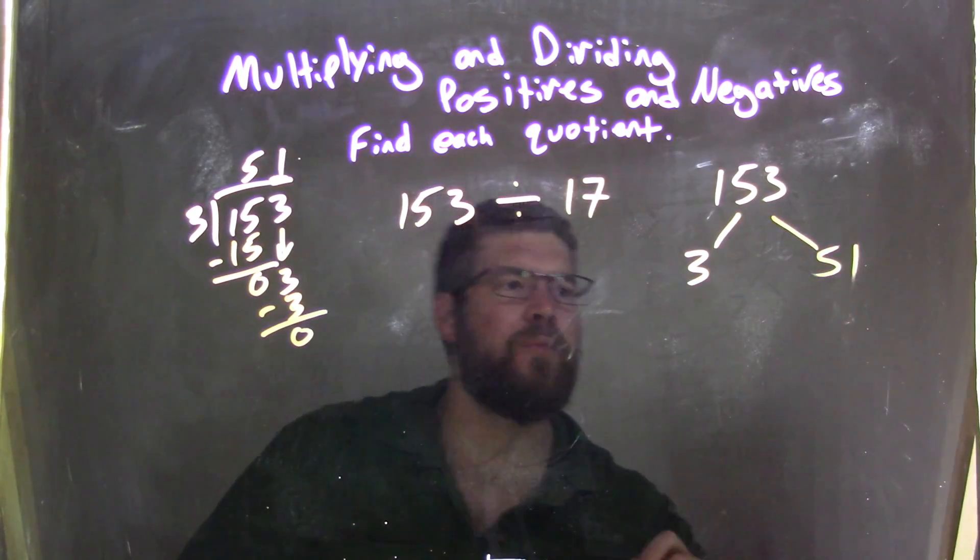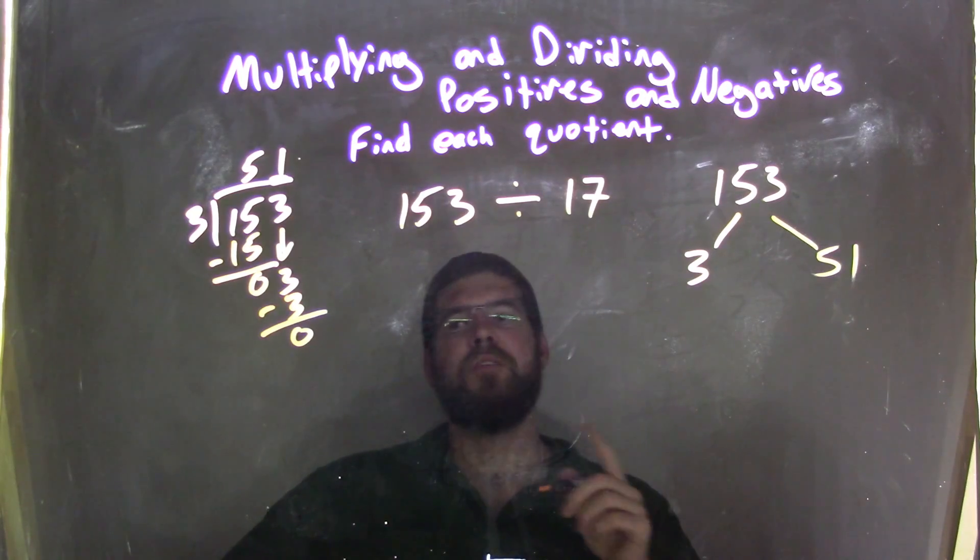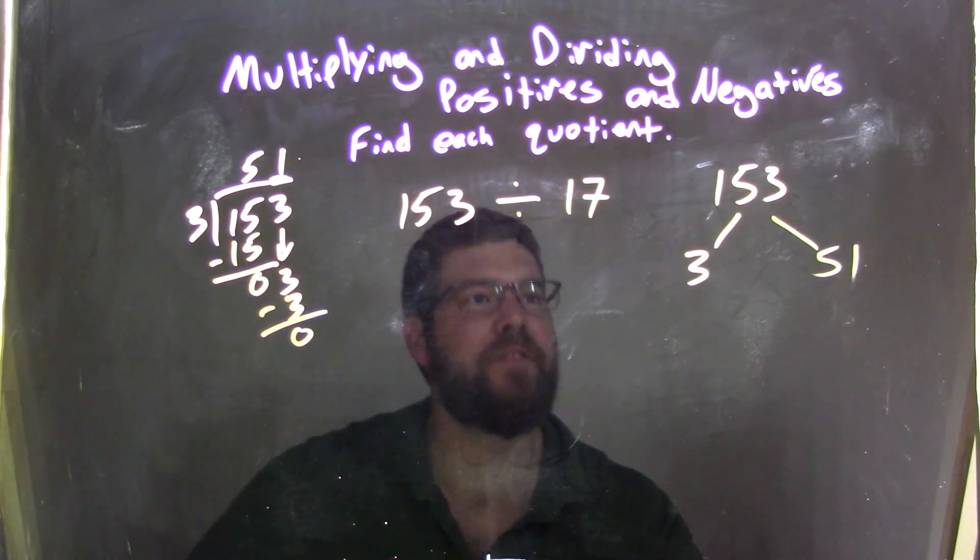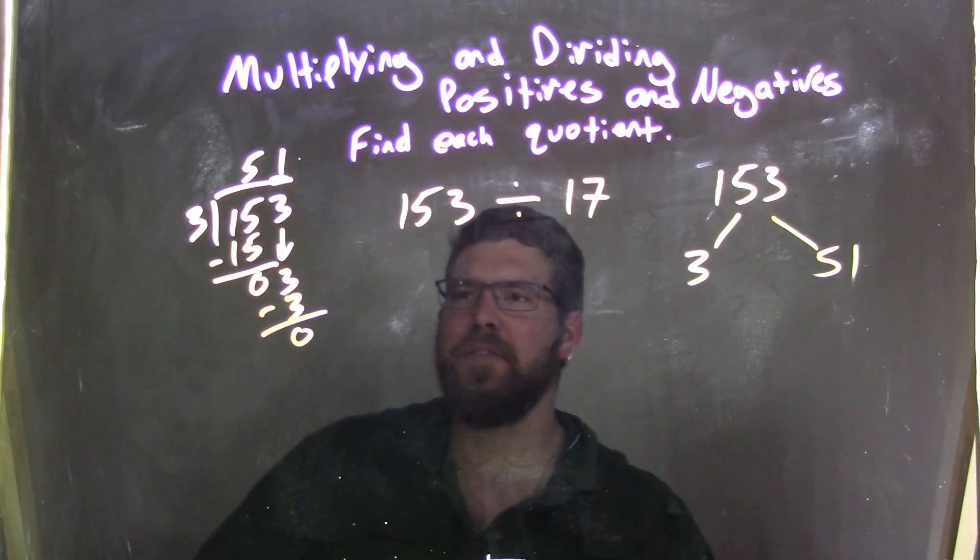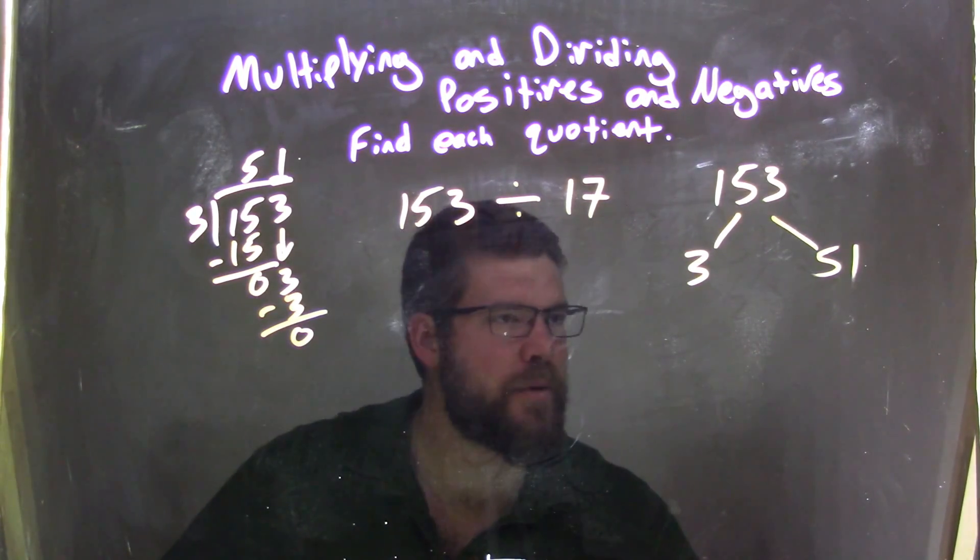So 51 is what I'm looking here, right? 51. So 3 goes into, multiply 3, 51 times, okay? Well, 51, is that divisible by 3?